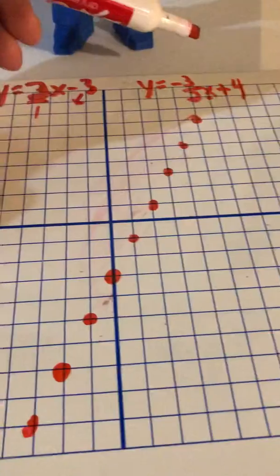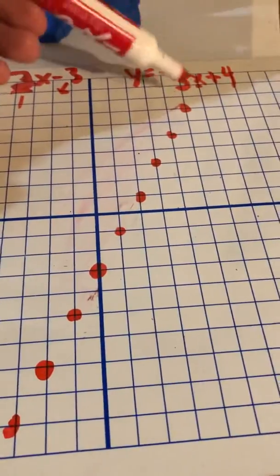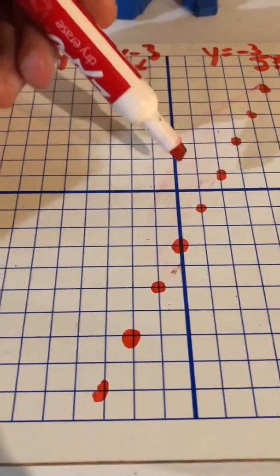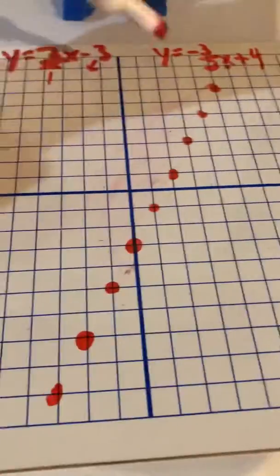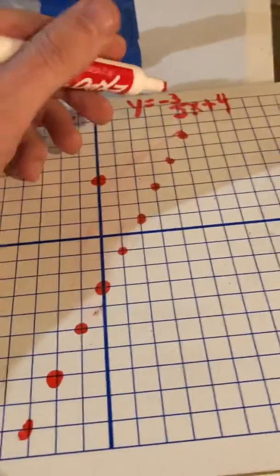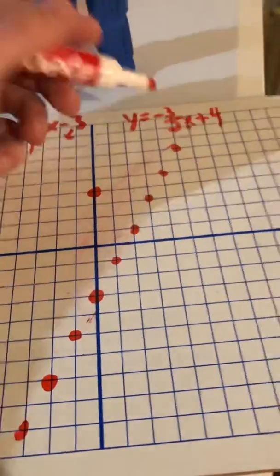The second line is y equals negative 3 over 2x plus 4. So I'm going to go to plus 4. So that's my y intercept. So up 1, 2, 3, 4. There, and now I'm going to follow my slope which is down 3 because it's negative and right 2.